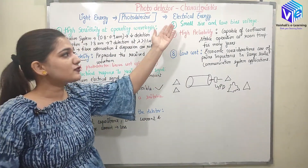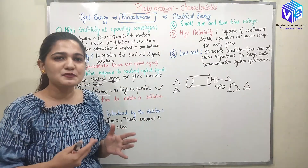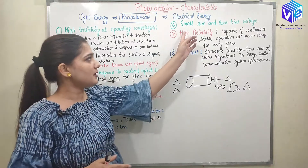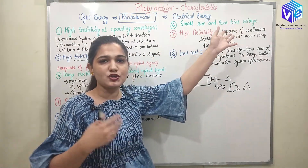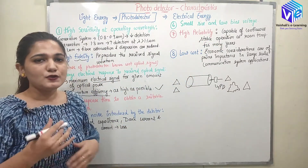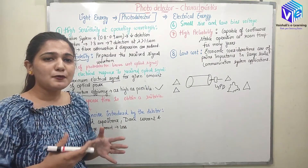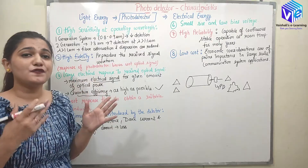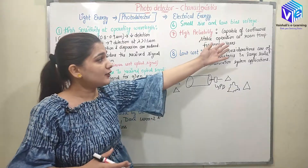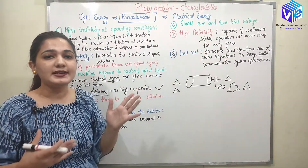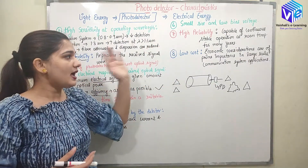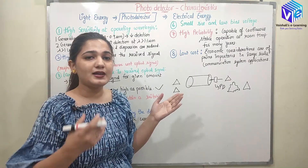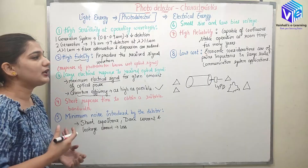The next property is that it should be of small size, because we want our device to be as small as possible. Also, the bias voltage should be low so that the operating power is less — the power requirement for its working should not be high. Coming to high reliability: the photodetector should work in the best condition at room temperature for many years without getting degraded. It should have high reliability and low cost. Economic considerations matter for large-scale communication, and we want devices to be as cheap as possible.